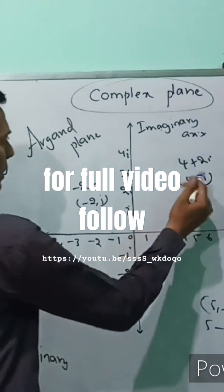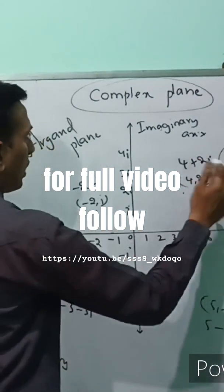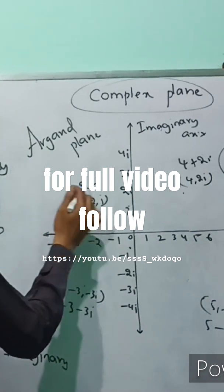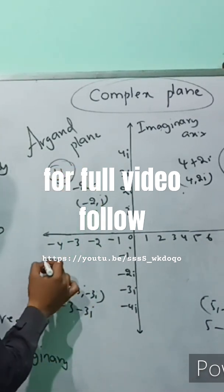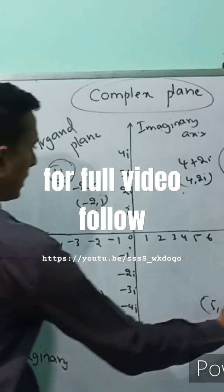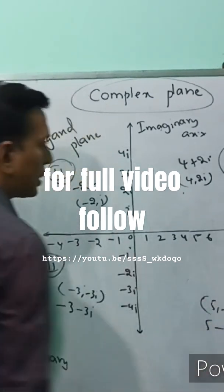Suppose 4+2i is in the first quadrant, -2+i is in the second quadrant, -3-3i is in the third quadrant, and 5-3i is in the fourth quadrant.